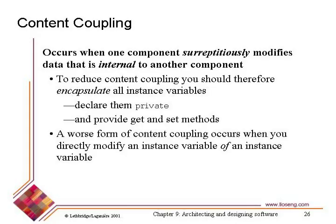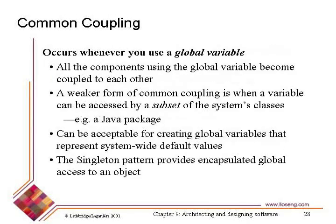Content coupling is the coupling where you have one component or module that is actually able to reach inside another one and make changes. That is bad and should always be avoided. The second kind we talked about was common coupling, which is basically the use of global variables, which tends to tie all parts of the system together. You want to generally try and avoid that unless there are specific circumstances in which it really is necessary.